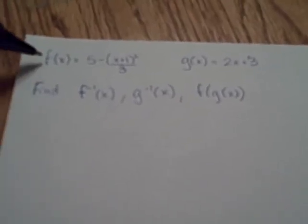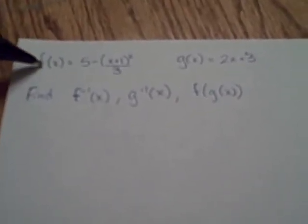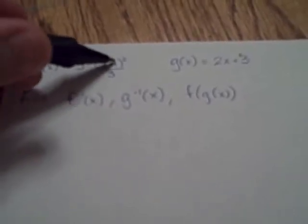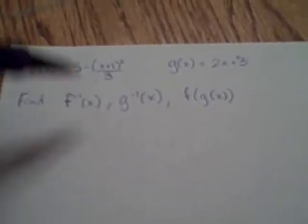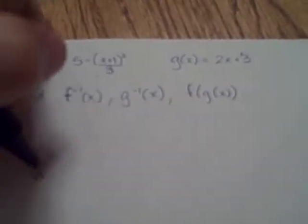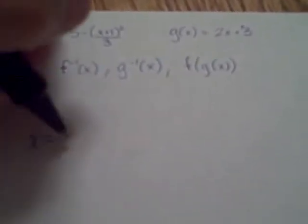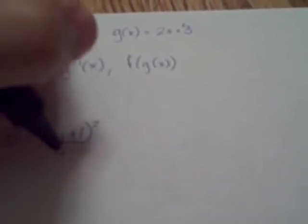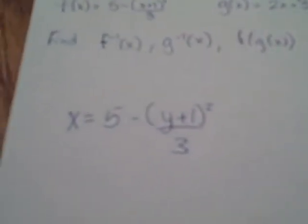Now first step in our first one, ignore the f of x and just say y equals 5 minus x plus 1 squared over 3. What we have to do is switch the x's and the y's, so that way we're starting out with x equals 5 minus y plus 1 squared over 3.